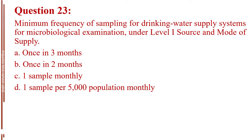Question number 23. Minimum frequency of sampling for drinking water supply systems for microbiological examination, under level 1 source and mode of supply. A. Once in 3 months. B. Once in 2 months. C. One sample monthly. D. One sample per 5,000 population monthly. The answer is Letter A, once in 3 months.